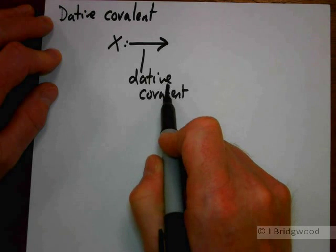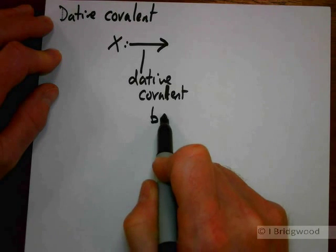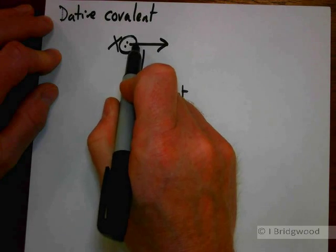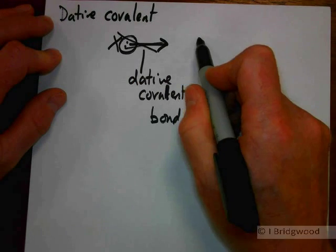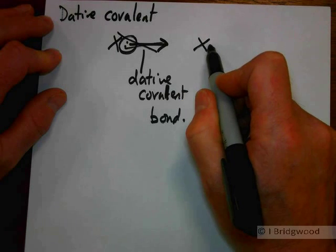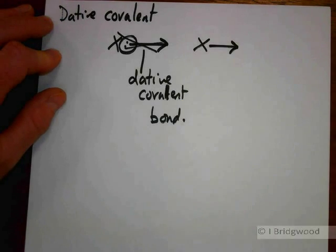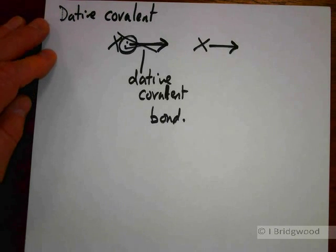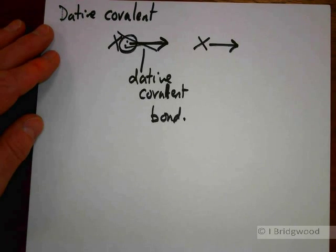Notice that you shouldn't really show both the pair of electrons and the line there. Let's take a couple of examples of this. Let's take ammonia, for example.